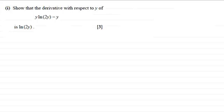Okay welcome back if you had a go. So let's see how you got on. Well if I'm doing this first of all what I'd want to do is just write out that I am differentiating with respect to y our function here which is y multiplied by the natural log of 2y minus y.